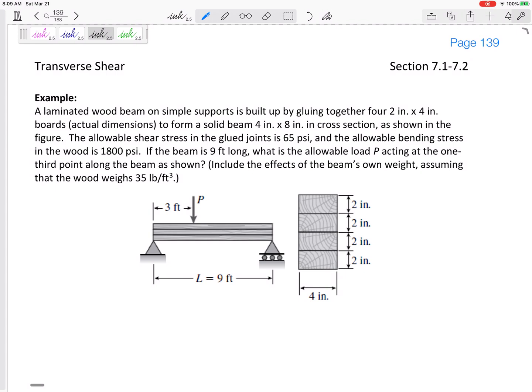This is like one of those failure problems. It says the shear stress, the VQ over IT can't get above 65 psi, but also the bending stress, the MY over I can't get above 1800 psi. So what's the maximum P? I'm going to go through all this. Set that to 65 and calculate the V, which gives me the P. And then separately, I'm going to set the bending stress to 1800, set it to its maximum. And that will give me the M. The M will give me the P.